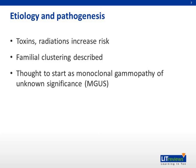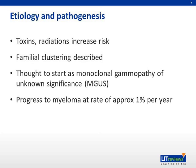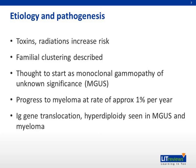The incidence of MGUS is about 3% to 4% in the age group above 50 years. MGUS is thought to progress to smoldering myeloma, and finally culminating in multiple myeloma through a process that progressively accumulates more genetic events, and also modulated by changes in the bone marrow microenvironment.